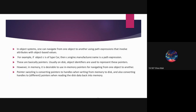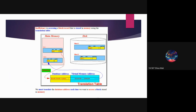Usually, on disk, object identifiers are used to represent these pointers. However, in memory, it is designed to use in-memory pointers for navigating from one object to another. For example, you can look at this image — this is a transition table where if you want to access XYZ, we need to go to the database address, get the virtual memory address, and get the value. This is a long process.